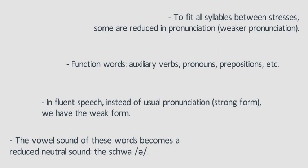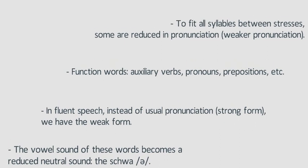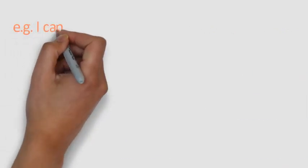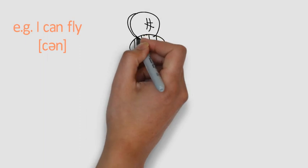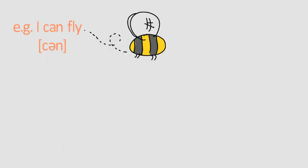Put your mouth in a slightly open and relaxed position for the schwa. Here are some examples. In 'I can fly,' the sentence stress falls on 'fly,' so the function word 'can' is reduced and pronounced 'can.' Listen: 'can.'